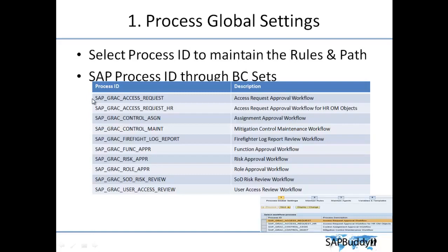In general we can use all these process IDs. Most scenarios you may encounter are already delivered by SAP. The first one is SAPGRAC Access Request — this will be the process ID we will use throughout this entire session to show how MSMP configuration works. This process ID is used for access request approval.